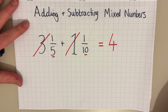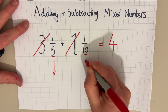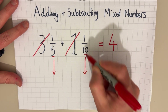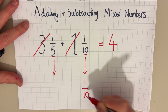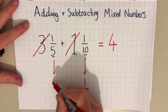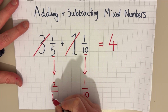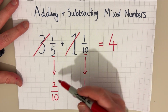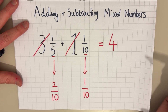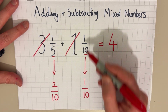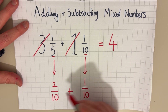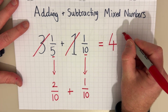The two fractions have different denominators, so I must change them so they have a common denominator. I'm going to keep one tenth the same and change one fifth into two tenths — I just multiplied five by two and one by two. So one fifth becomes two tenths, and one tenth stays as one tenth. Then I add those two fractions together and that gives me three tenths.